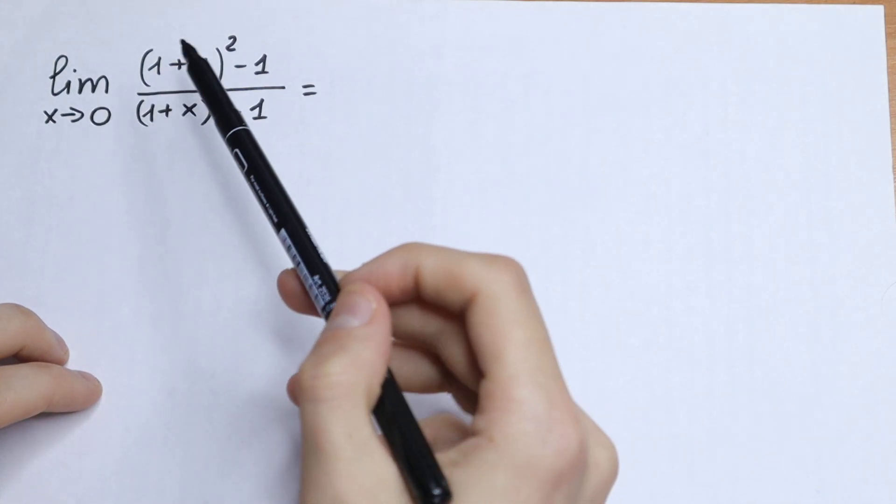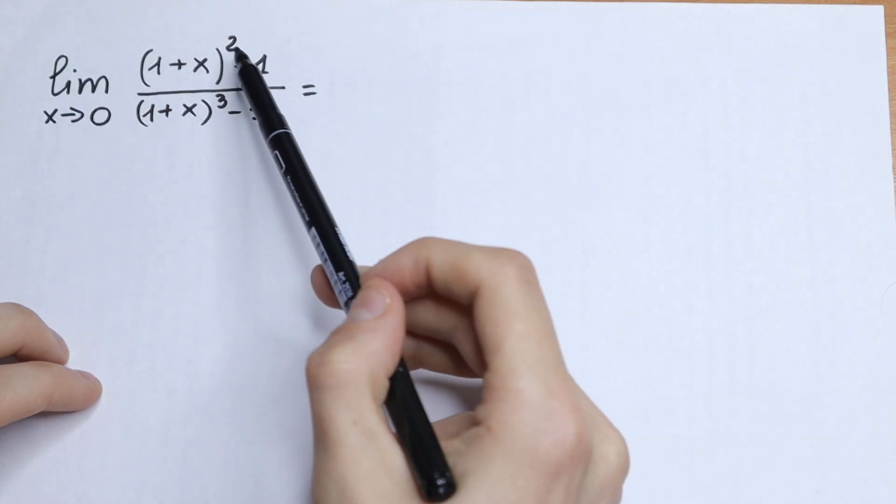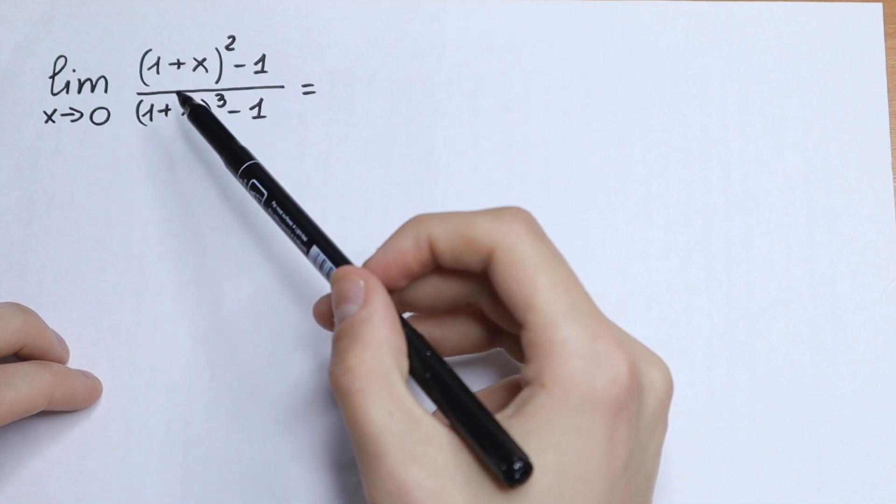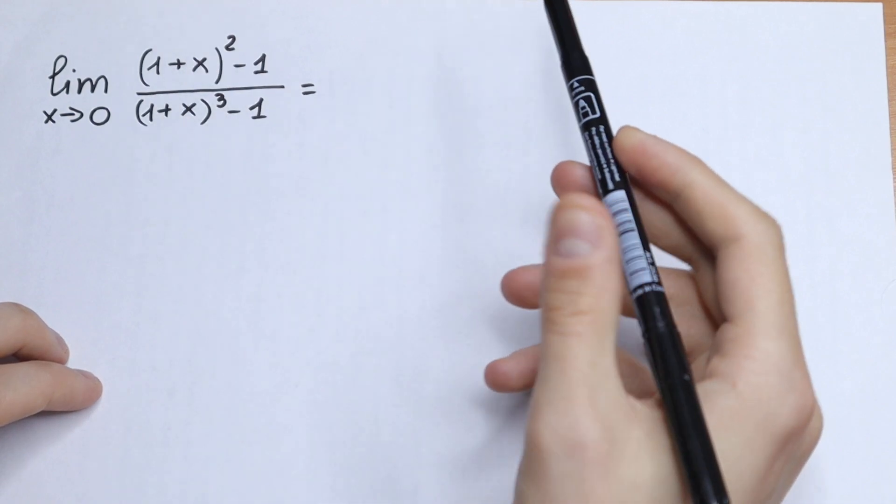What is the limit as x approaches 0 of the function (1+x)² - 1 all over (1+x)³ - 1?